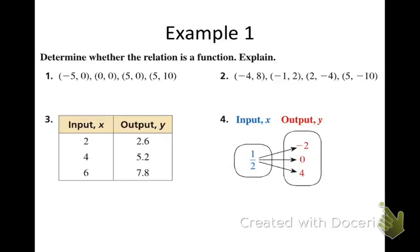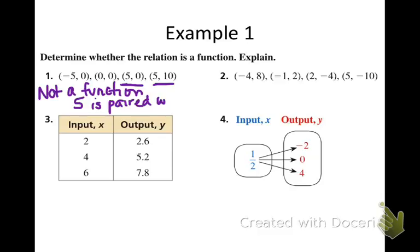Determine whether the relation is a function and explain. When I look at all of the x values in number 1 — negative 5, 0, 5, and 5 — I can see that 5 is paired with 0 and 5 is paired with 10. There's no rule mathematically that would have you put in a value of 5, do a calculation, and spit out two different quantities. So we would say it is not a function. Not a function — 5 is paired with two different outputs.